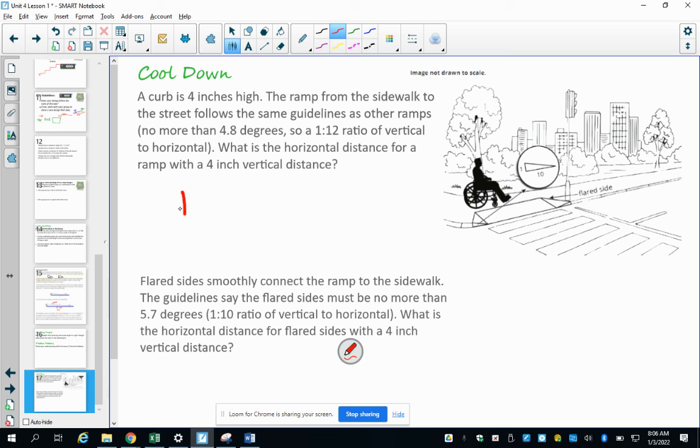So this one says that we have a curb that's 4 inches tall and a ramp to a sidewalk follows the same guidelines. What's the horizontal distance? So we want to know this part of this ramp. So remember, ADA guidelines is 1 to 12. So a couple ways you can do this is think that this is 4 times taller. So then this is going to be 4 times longer. So 12 times 4, which is 48. You can also set up a proportion. 1 over 4, so height over height, equals 12 over X and then cross multiply.